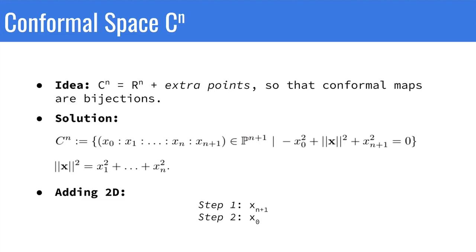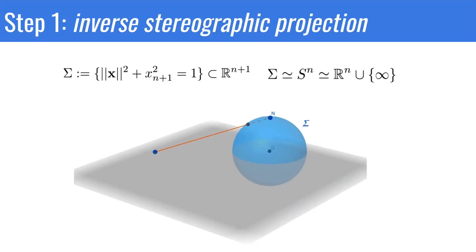I'm gonna try to clarify these extra dimensions. Why do we need them? In the first step, we're gonna apply inverse stereographic projection to R^n, and we're gonna call the result of doing that sigma.